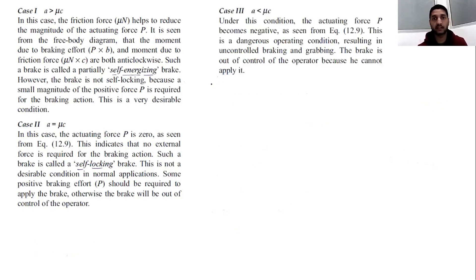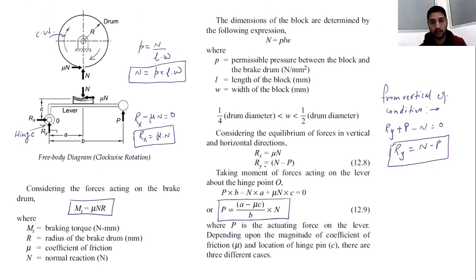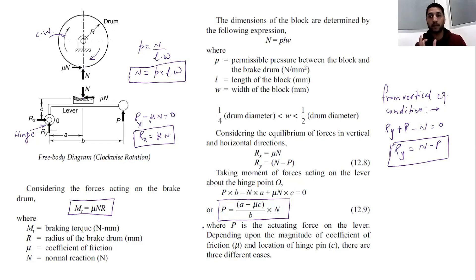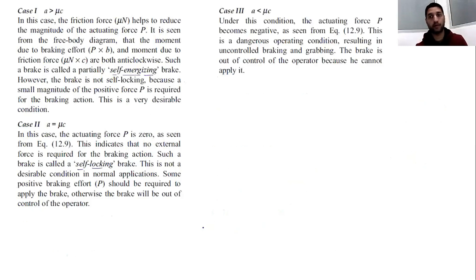Case three: if a is less than μc, then μc is greater than a, so P becomes negative. This means the blocks grab the drum automatically without any applied force — the brake is completely out of the operator's control. Such brakes are very dangerous and are not desirable.